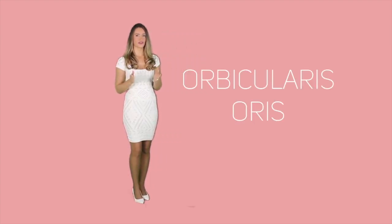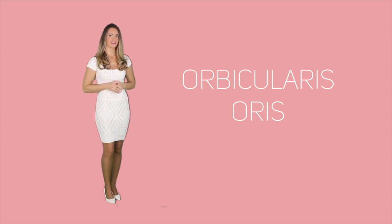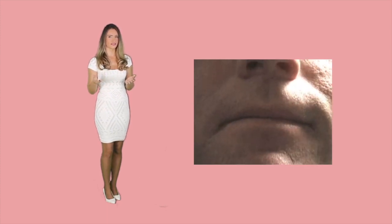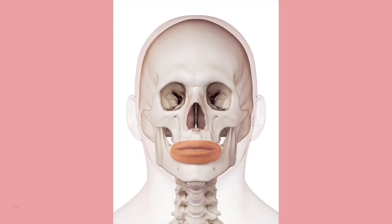Next, let's look at a muscle called the orbicularis oris. That is basically a sphincter, meaning it controls the opening and closing of the mouth. The anatomical location of the orbicularis oris is medial to the skin, the lips, and the mucous membrane. It is referred to as the kissing muscle due to the puckering motion it produces on the lips.